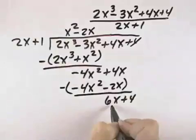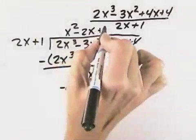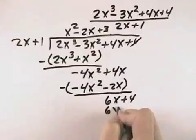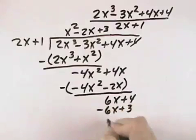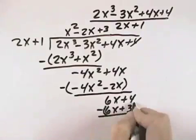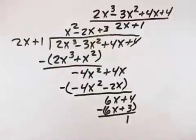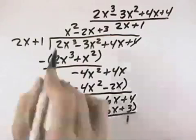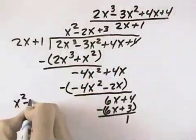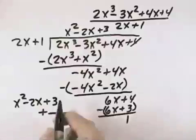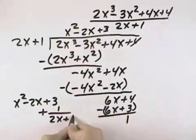Finally, 2x goes into 6x plus 3 times, so 3 times 2x is 6x, plus 3. And when we subtract, subtracting the 6x is 0, 4 minus 3 is 1, means we have a remainder of 1. So what we have is x squared minus 2x plus 3, plus a remainder of 1 over 2x plus 1.